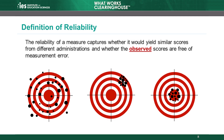Outcome measures must also have a high degree of reliability to meet WWC requirements. The reliability of a measure captures whether it would yield consistent scores from different administrations. A highly reliable measure indicates that the observed scores have low measurement error. For example, a reliable measure will return similar results if a study gives the same assessment to the same group of students repeatedly.